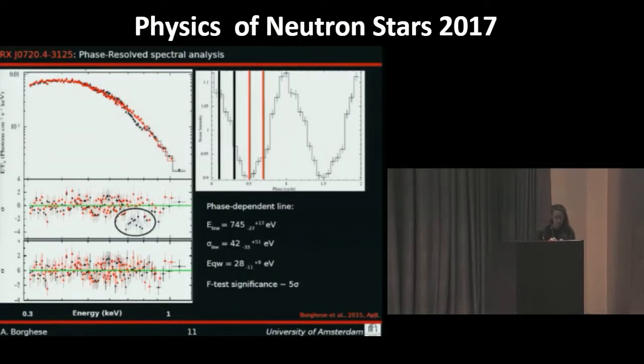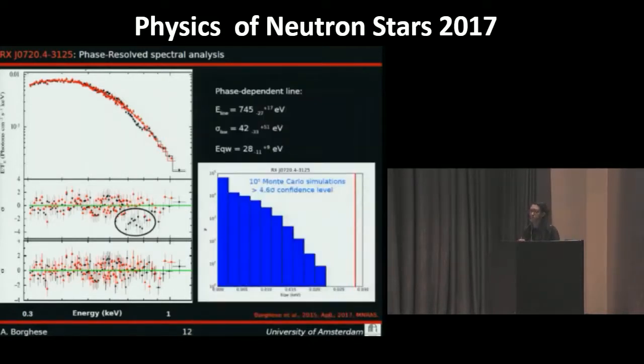To obtain a preliminary estimate for the significance of the line, we use the F-test, but we know that a more rigorous approach requires Monte Carlo simulation. So we simulated 10^5 spectra according to the null hypothesis, that in this case is just a black body model. Then we fit these spectra with the alternative model, that is black body model plus this Gaussian line in absorption.